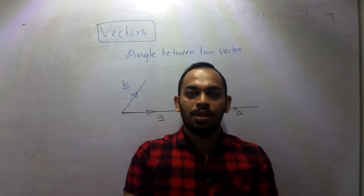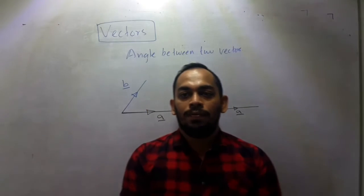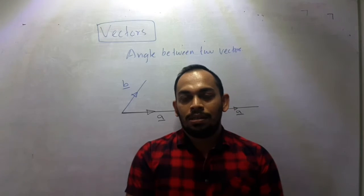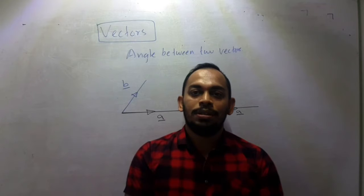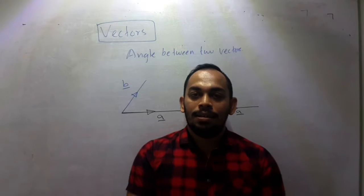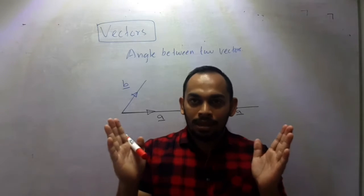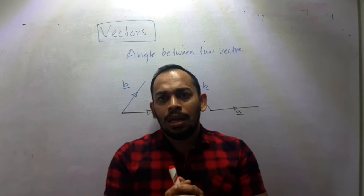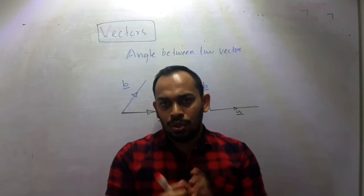Hello guys, so in this video we can learn how to define the angle between two vectors. You know that vector quantities have both magnitude and direction, so if we have two different vectors who are not parallel, then obviously there will be an angle between these two.